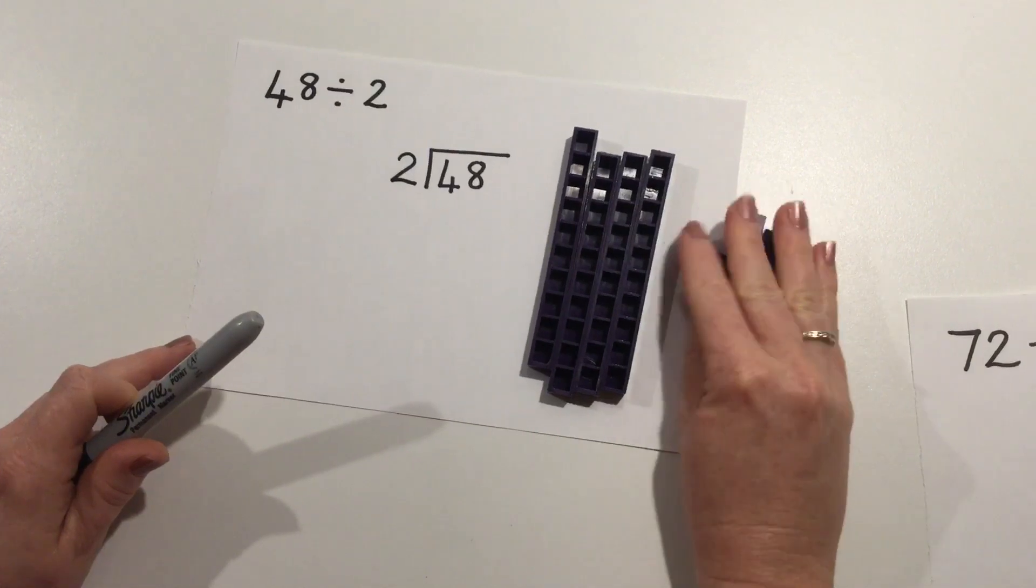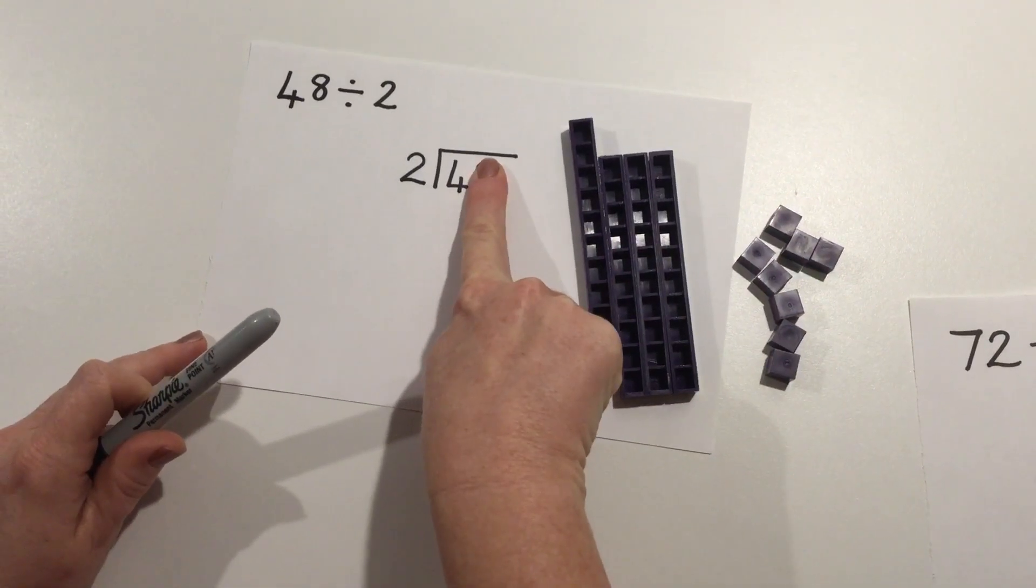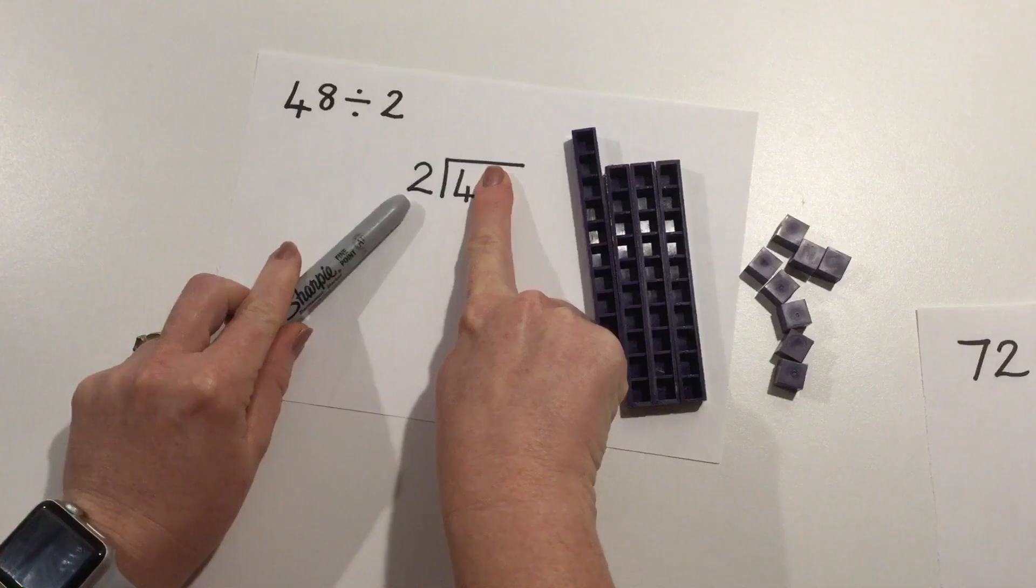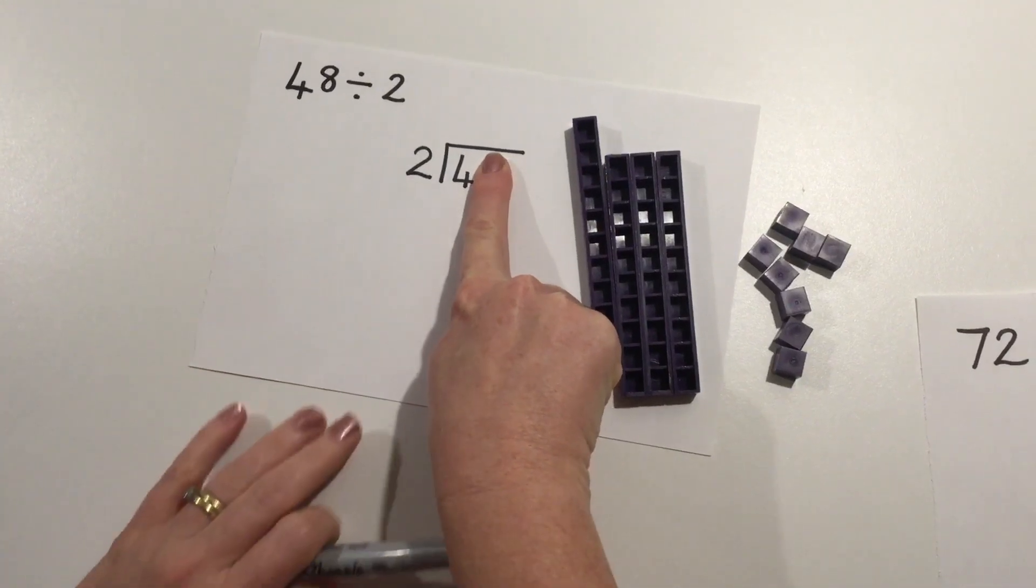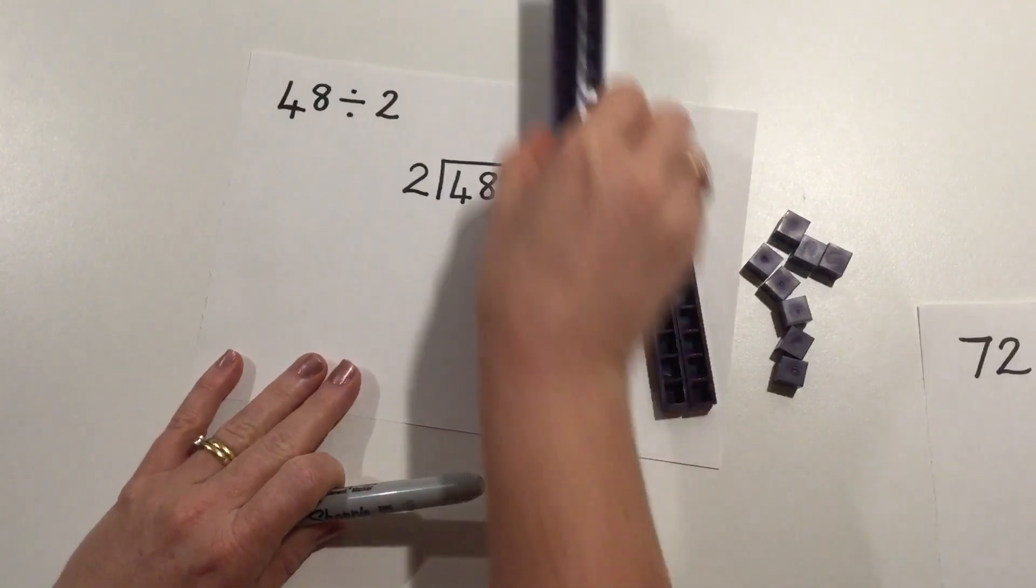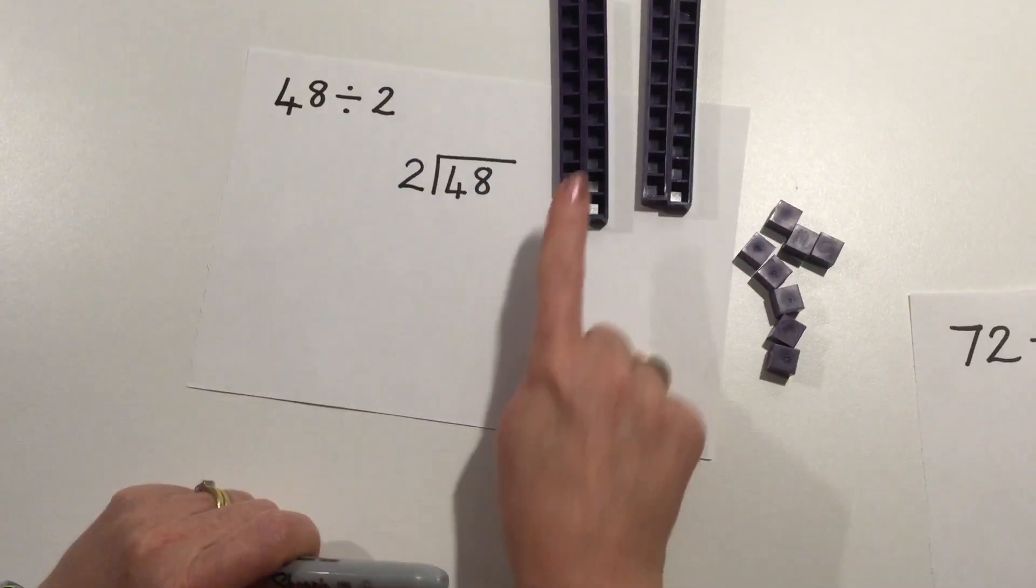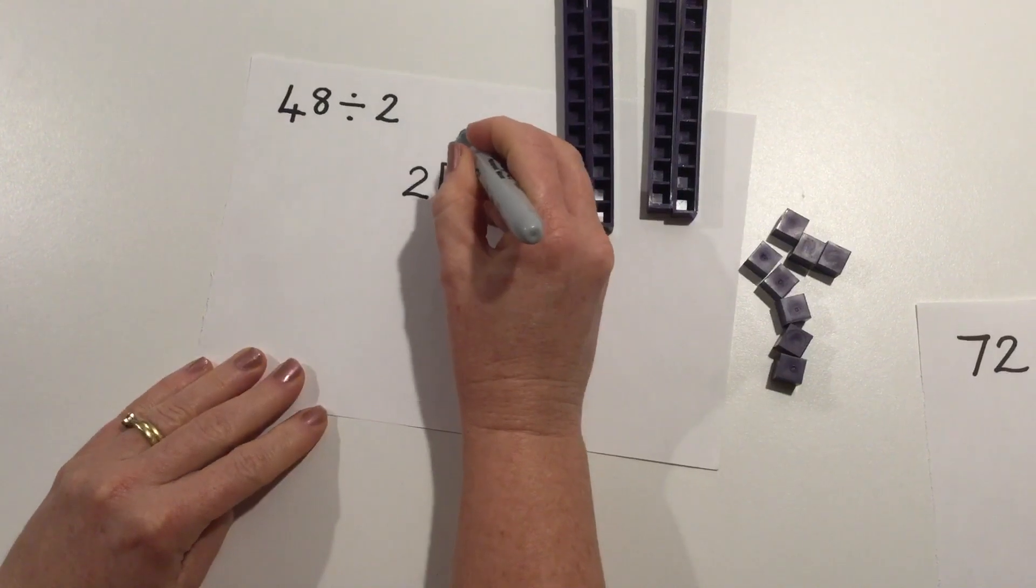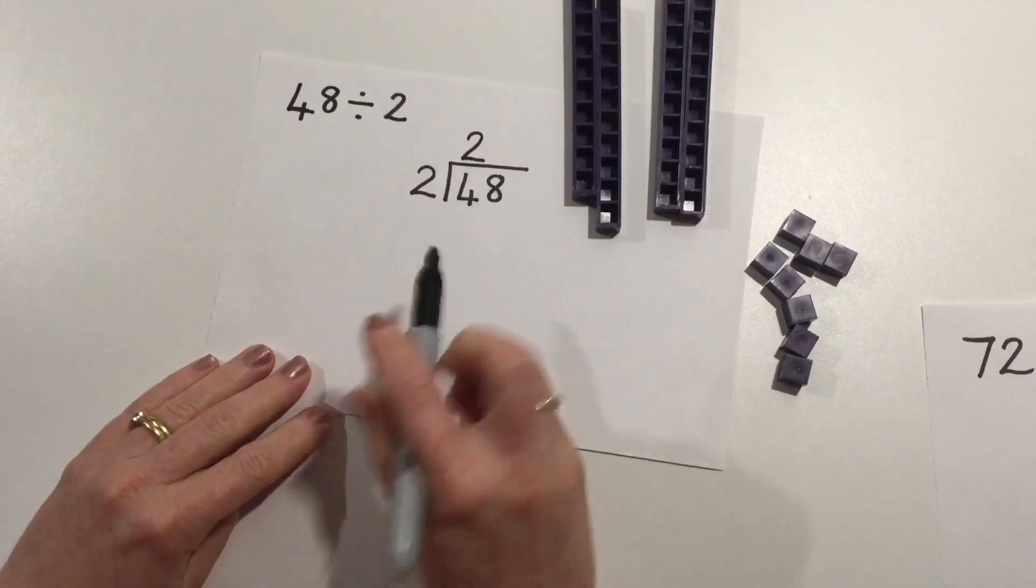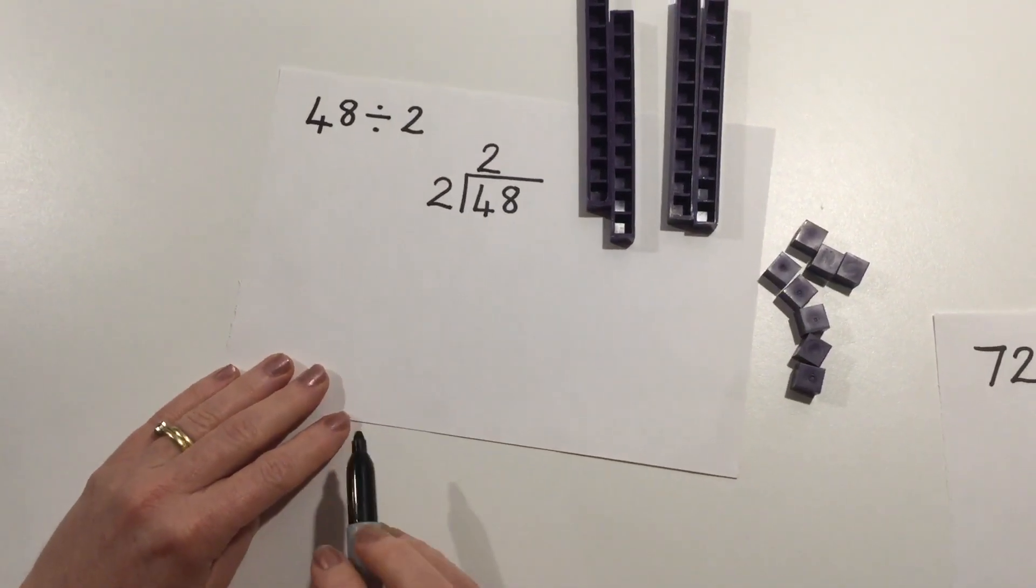So I'm going to first of all ignore my ones and start with my tens. How many groups of 2 can I make with 4 tens? I can make 1, 2. So I've got 2 groups of 2, which I write on top of my tens to show that it's tens.